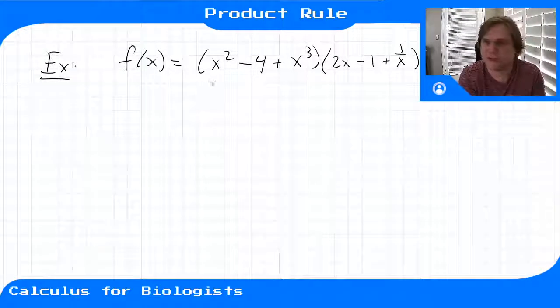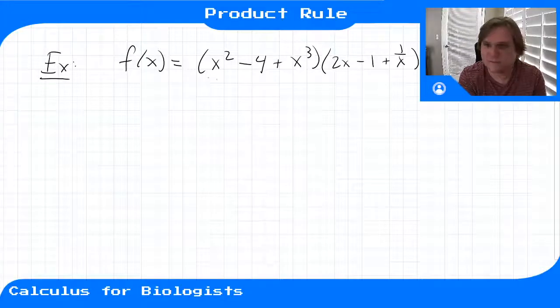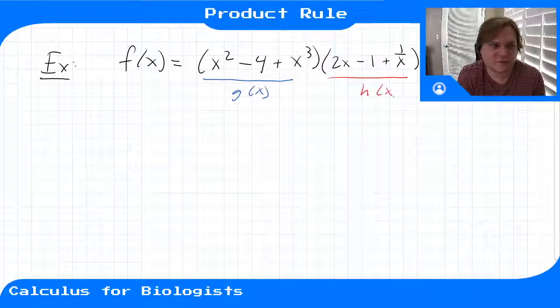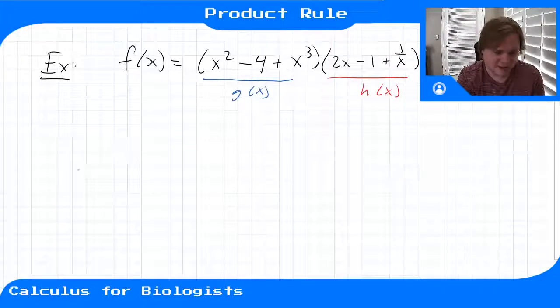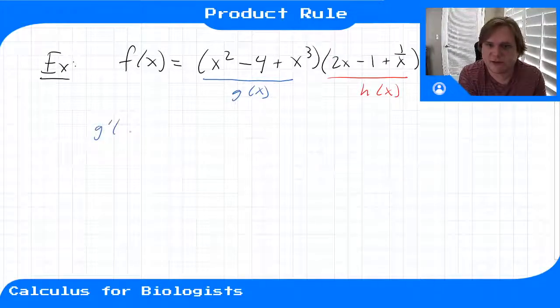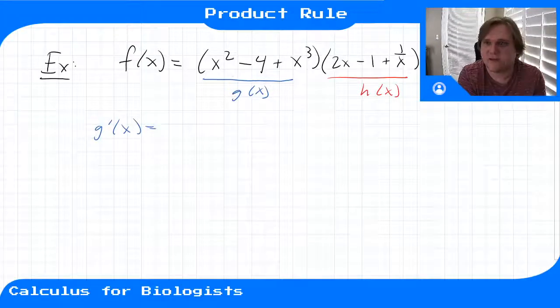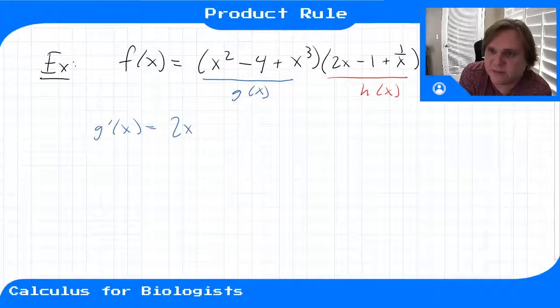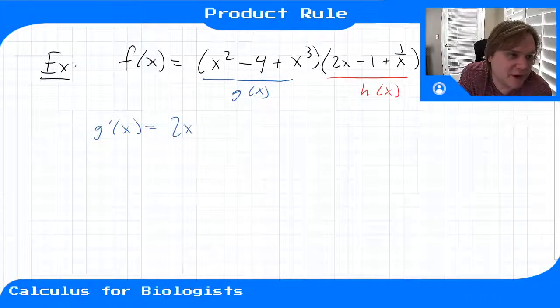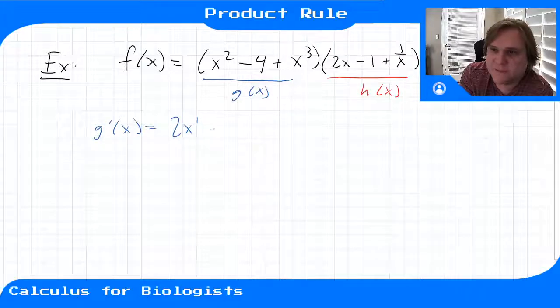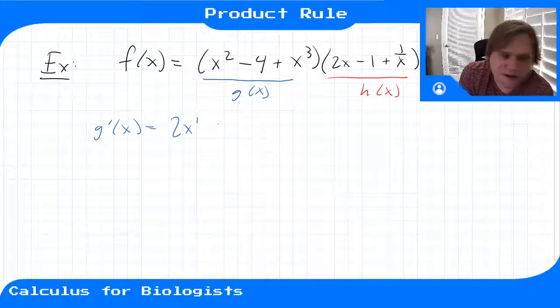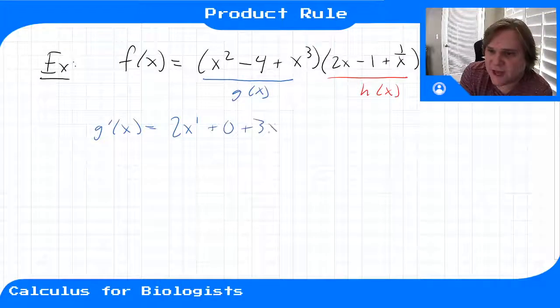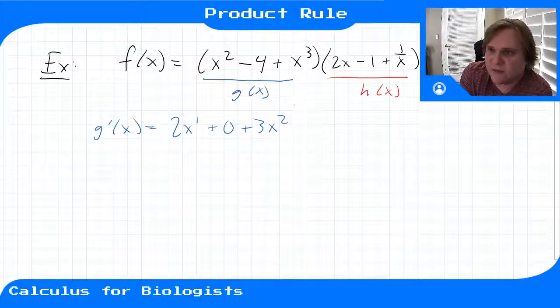So this is our function g, and this one here is our function h. Then the derivative g prime is given by the derivative of this polynomial. We take the power down: 2x, x to the power down by 1 you get 1. Minus 4 is a constant, that becomes 0. And then x cubed becomes 3x squared, 3 minus 1 gives us 2.